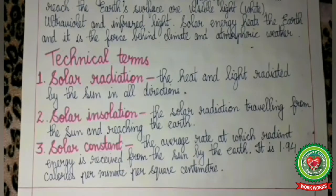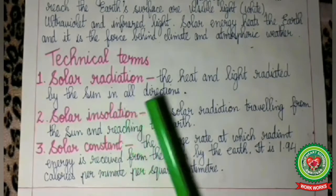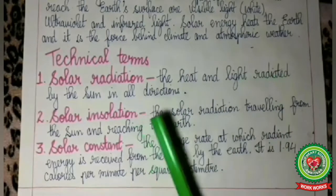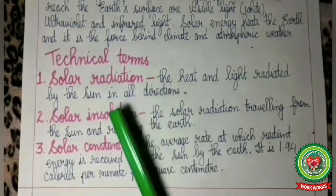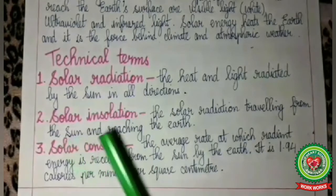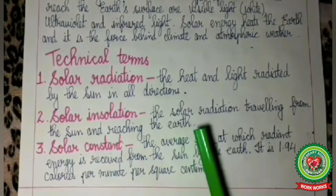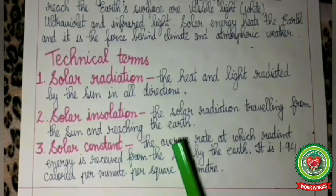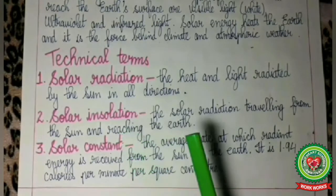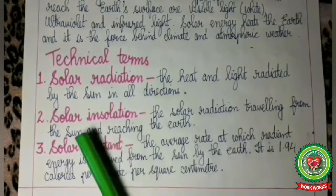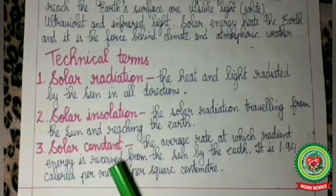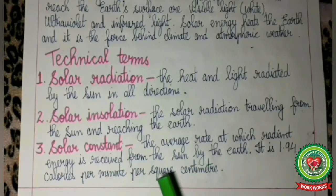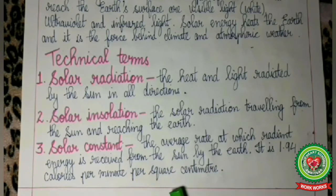Now let us see the technical terms coming in today's topic. Number 1: Solar radiation — the heat and light radiated by the sun in all directions is called solar radiation. Solar insolation — the solar radiation traveling from the sun and reaching the earth is called solar insolation. It means insolation is the amount of heat received by the earth from the sun. Solar constant — the average rate at which radiant energy is received from the sun by the earth; it is 1.94 calories per minute per square centimeter.